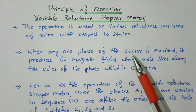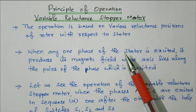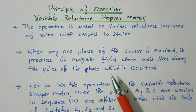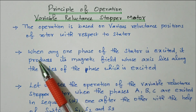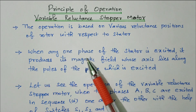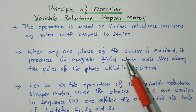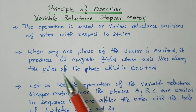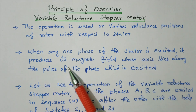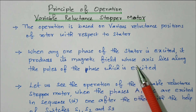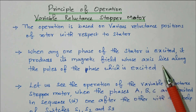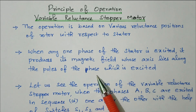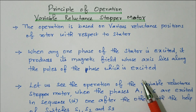The construction of this variable reluctance stepper motor — a separate video is available. When any one phase of the stator is excited, it produces its magnetic field whose axis lies along the poles of the phase which is excited.